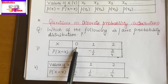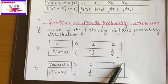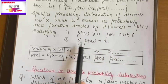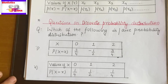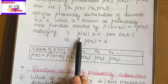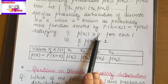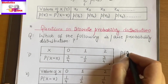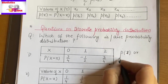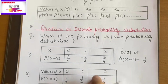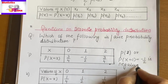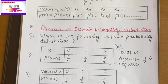X is a discrete random variable. Now move to checking the conditions. The first condition for a valid probability distribution is that all probabilities must be non-negative. Looking at the table, the second probability — defined at x equals 1 — is minus one-half. That is negative. This means the first condition fails. Therefore, this is not a valid probability distribution.